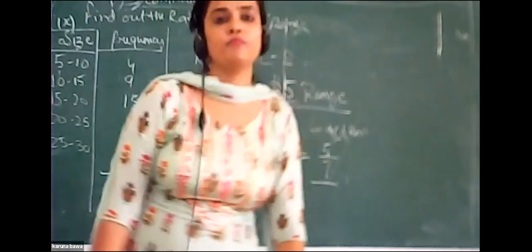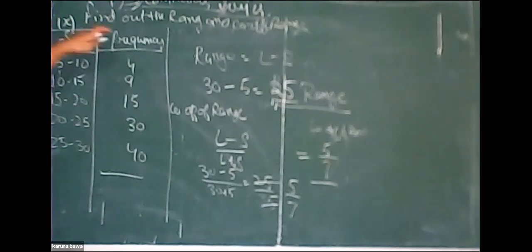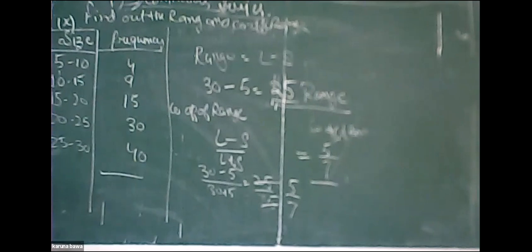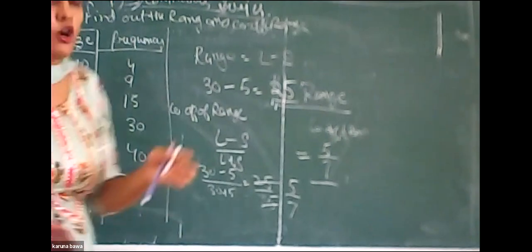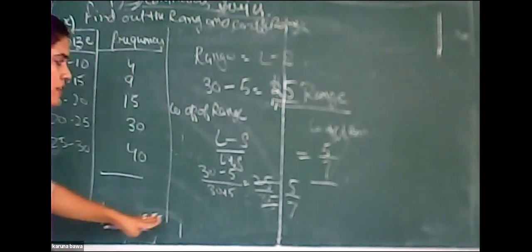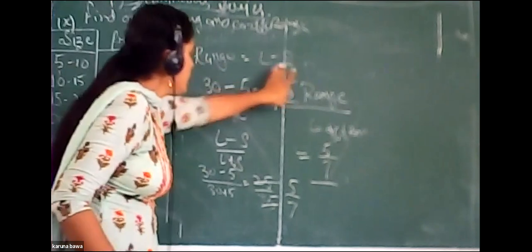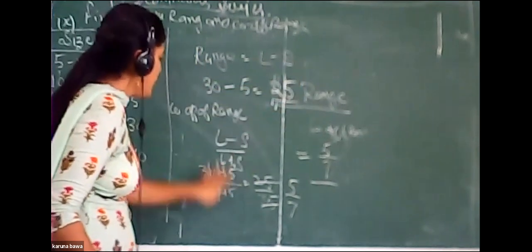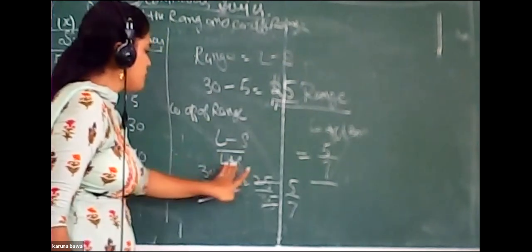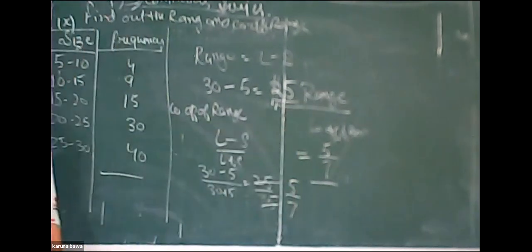So, in summary: the individual series uses individual values, the discrete series uses X values and frequency, and the continuous series uses class intervals with X values and frequency. The formula for range is L − S (largest value minus smallest value), and the coefficient of range is (L − S) / (L + S). After applying these formulas we find the answers for range and coefficient of range.